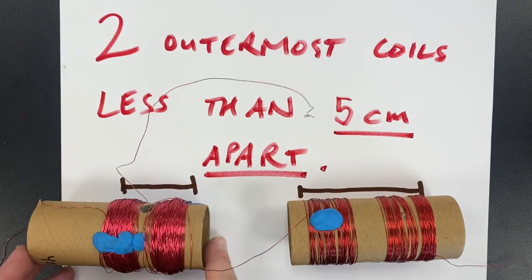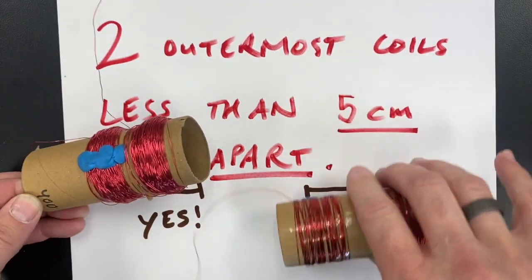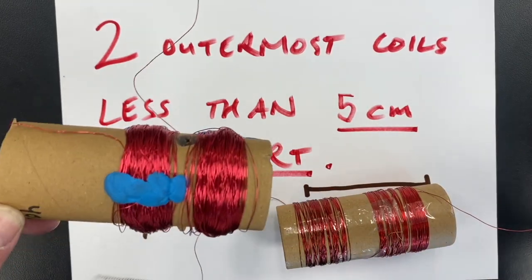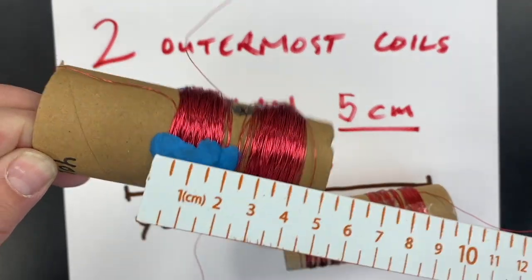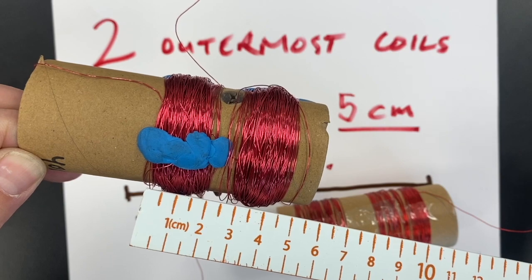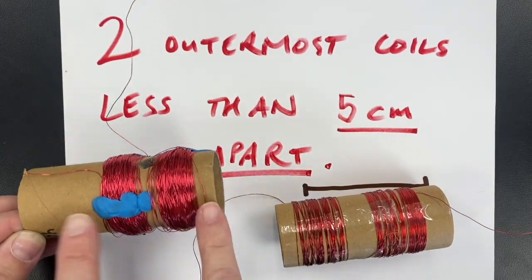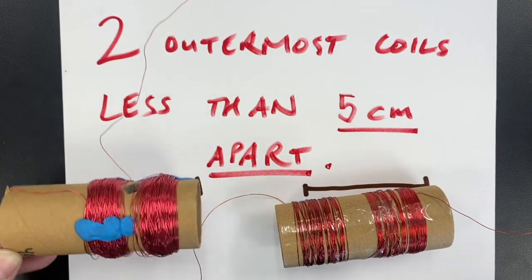Here's an example of what that looks like. This is a good wrapping distance. We can tell this measurement is about four and a half centimeters or so from between the two outermost coils of this wrapping.